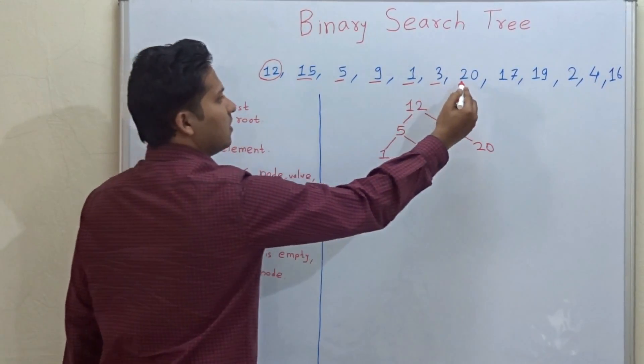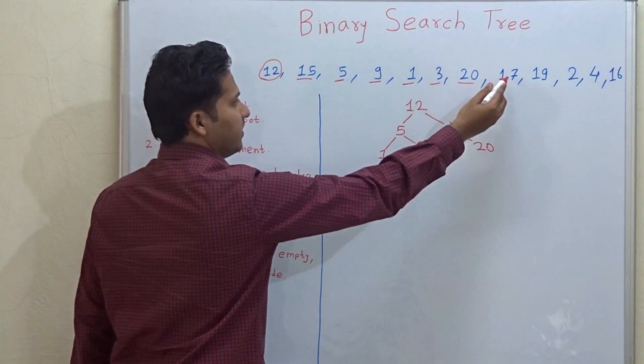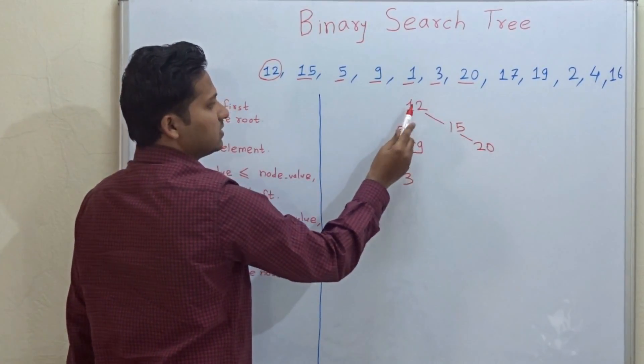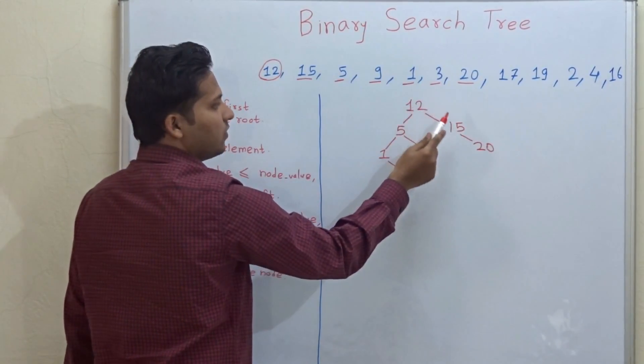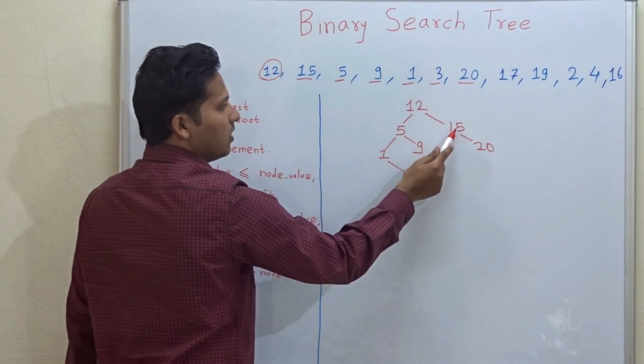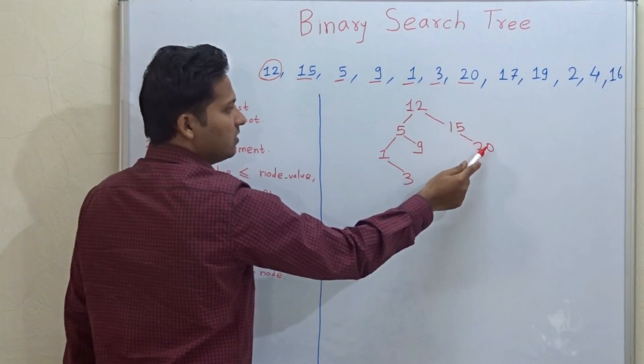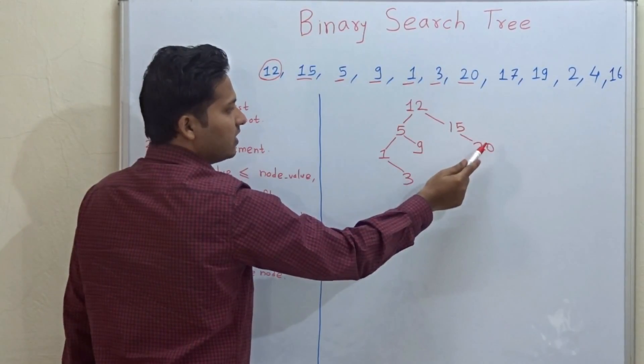Then 17: 17 is greater than 12, so we go right. 17 is greater than 15 but less than 20, so it comes to the left side of 20.